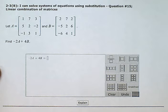Let A equal the matrix [1, 7, 3; 5, 2, -2; -1, 3, 1] and B equal the matrix [2, 7, 2; -5, 2, 6; -6, 4, 1]. Find -2A + 4B.